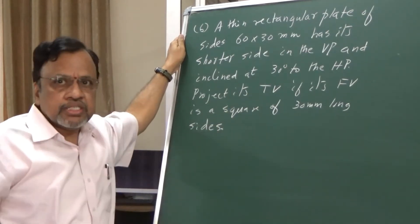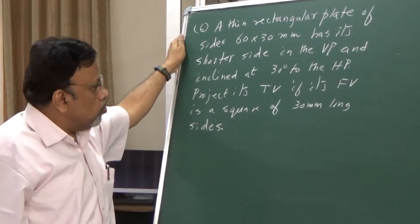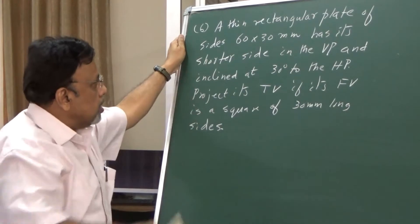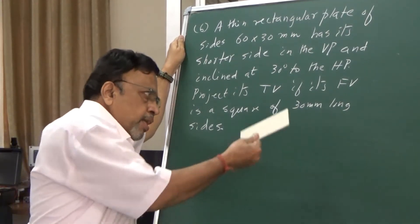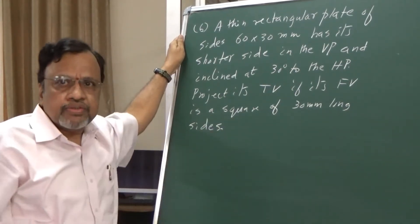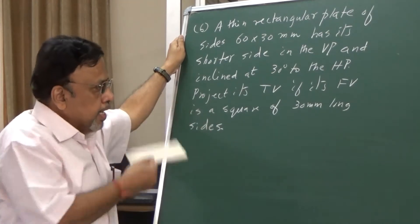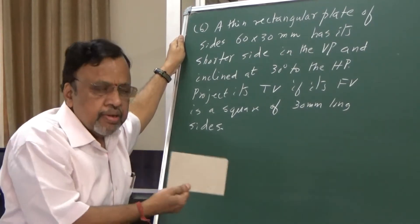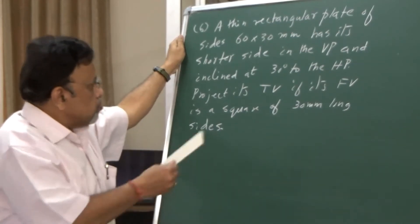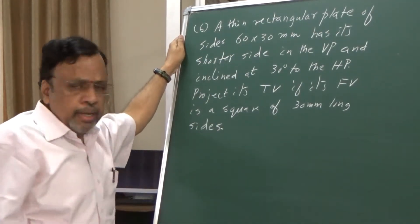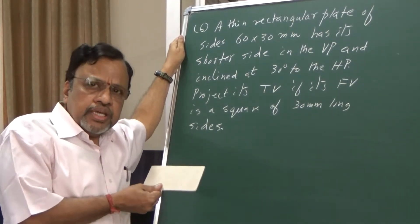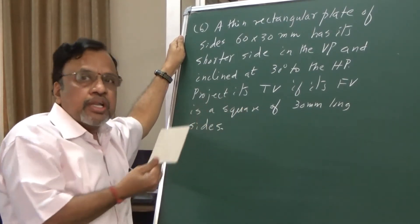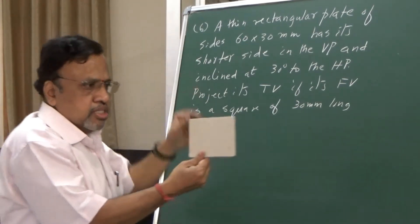Now if you read the next sentence: draw its top view if its front view is a square of 30 mm long sides. This particular rectangular plate, when you draw the front view, should be seen as a square. Since this rectangular plate is to be seen as a square, that particular rectangular plate has to be inclined to that particular view plane only. It is given that this plate is seen as a square in the front view — so what plane must it be inclined to?